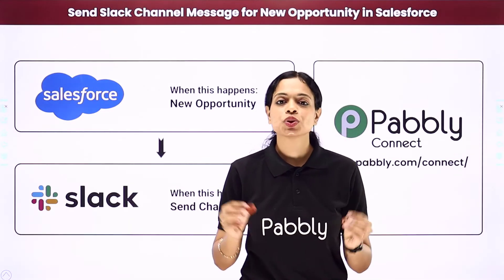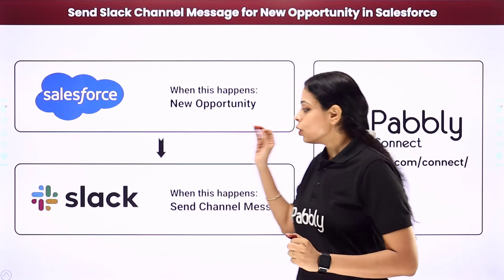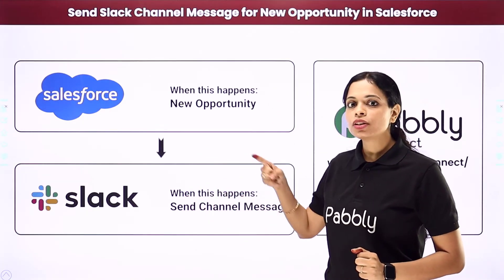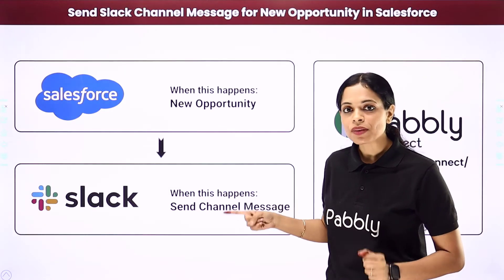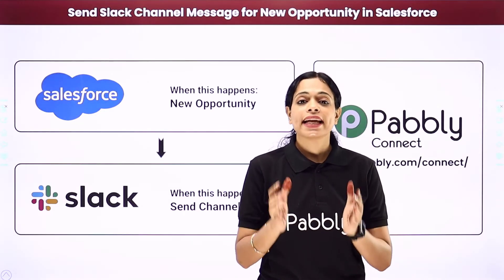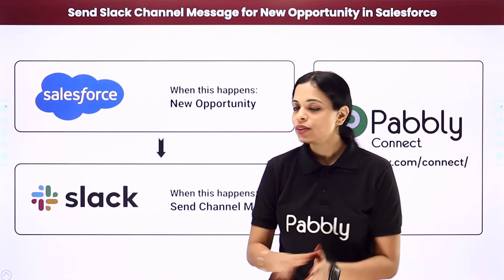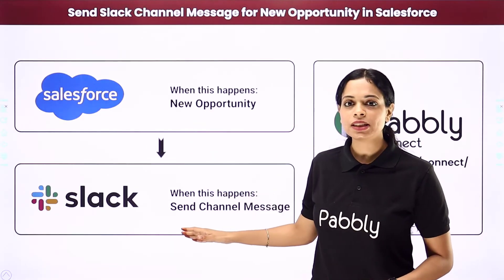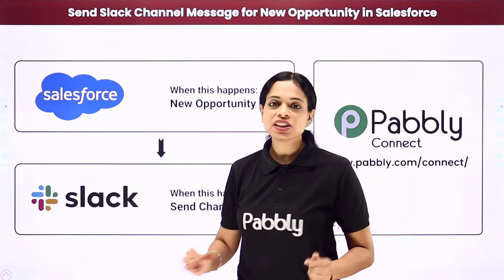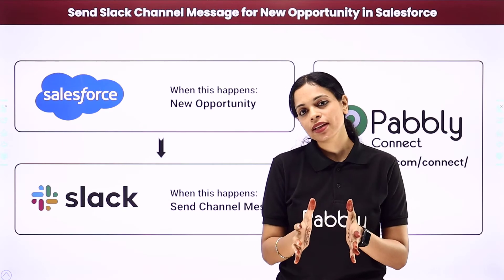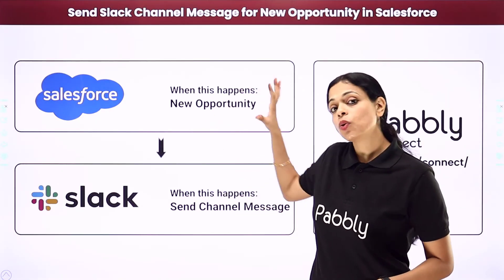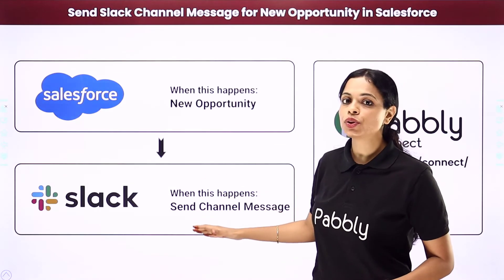Slack is an instant social messaging app. Every time you want to share information, you have to repeat the process, and this is definitely going to be time-consuming and hectic. What if this process could get automated? These two applications can be integrated so that every time there is a new opportunity, a message with all the details will automatically be shared on Slack with your team.